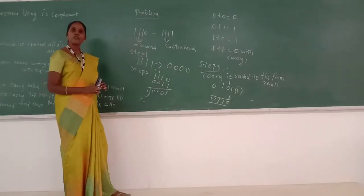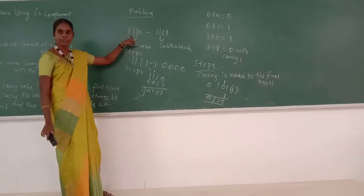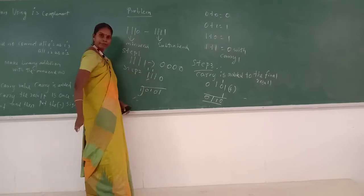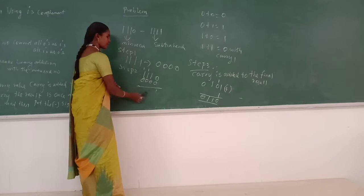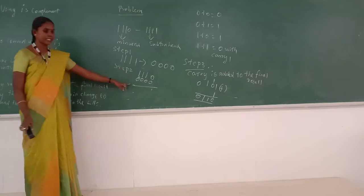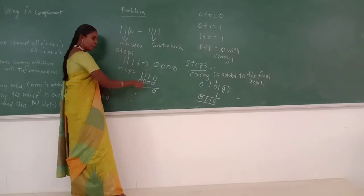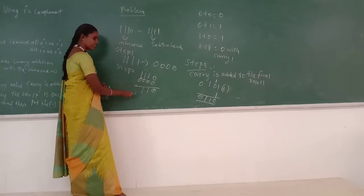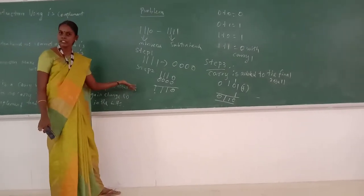Step 2: Make binary addition with the minuend number. This is the minuend number and this is the conversion number 0 0 0 0. Applying basic binary addition: the final result is obtained. There is no carry value.